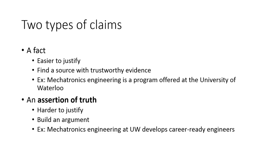The next type of claims are going to require you to justify things in a much more detailed and careful way. They are called assertions of truth. This is where you say something and assert it as though it is already true. These are much harder to justify and require you to build an argument. For example, if I said that Mechatronics Engineering at the University of Waterloo develops career-ready engineers, there's a lot to that claim, but I've said it as though it's a fact. I'd likely have to talk to alumni, talk to businesses, find internal reports from the University of Waterloo, and essentially build an argument showing that graduates are capable engineers in their careers — very different from just going to a website and finding the one place where it says we offer this program.